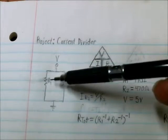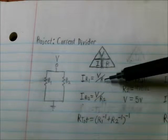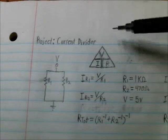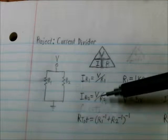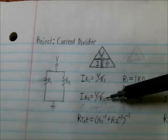So to find the current through R1, it's just the voltage V divided by the value of R1. And to find the current through R2, it's the voltage divided by the value of R2.